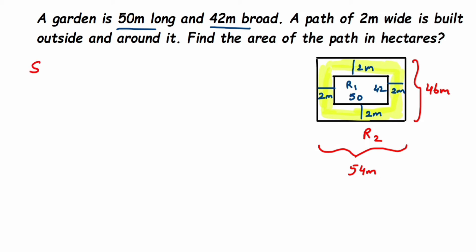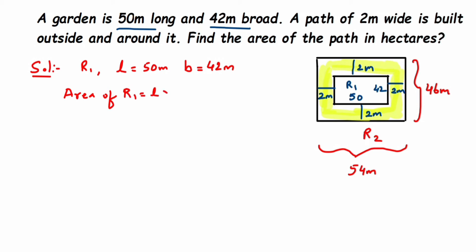Now I'm going to find out the area of each rectangle. For rectangle R1, length is 50 meters and breadth is 42 meters. Area of R1 equals length multiplied by breadth, so 50 meters multiplied by 42 meters gives us 2100 square meters.